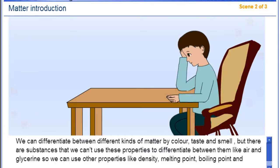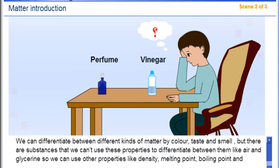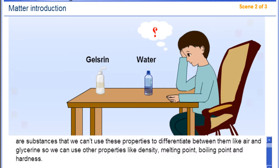We can differentiate between different kinds of matter by color, taste and smell. But there are substances that we cannot use these properties to differentiate between them, like air and glycerin, so we can use other properties like density, melting point, boiling point and hardness.